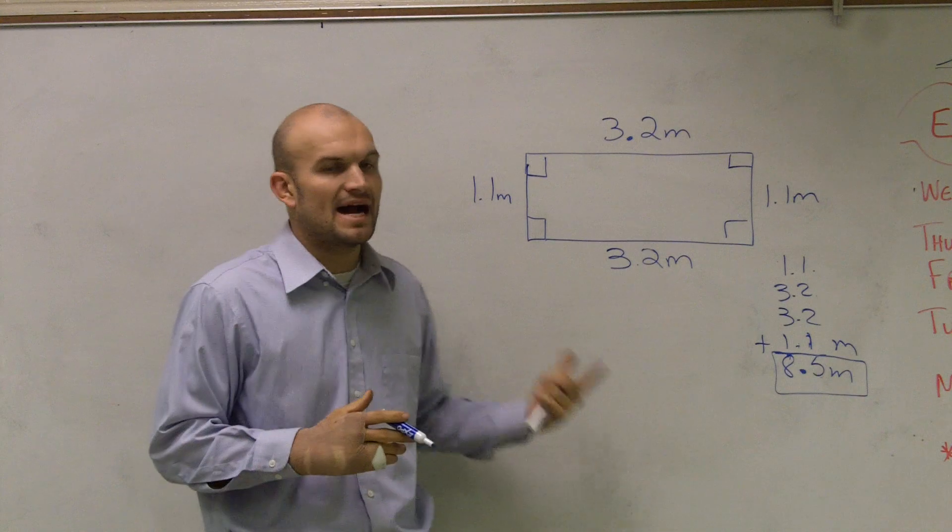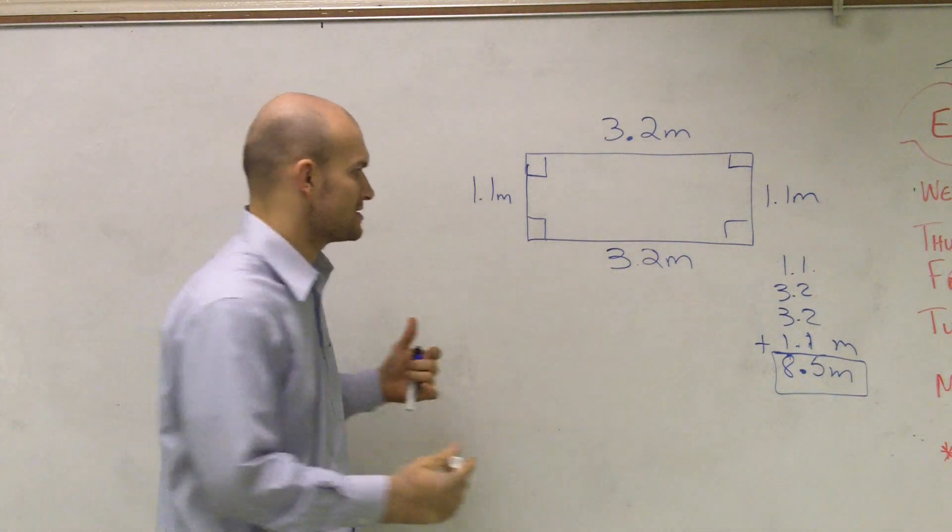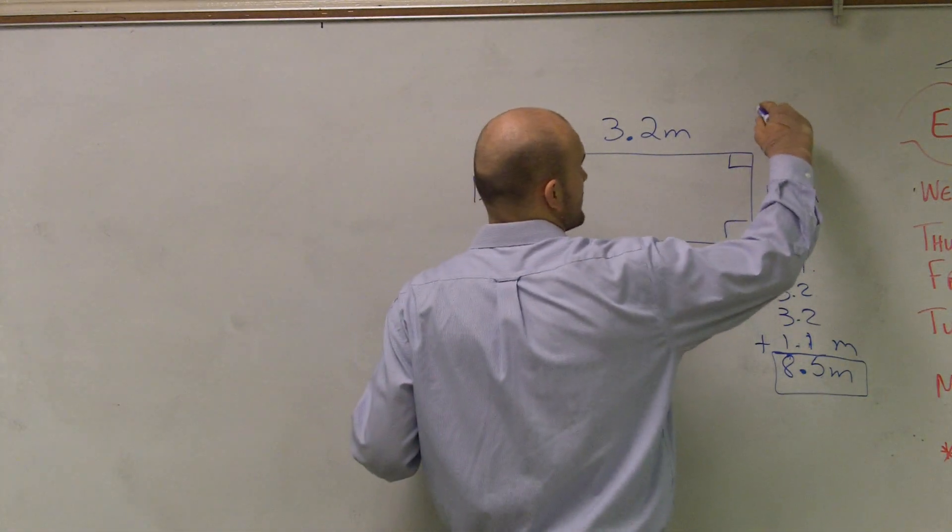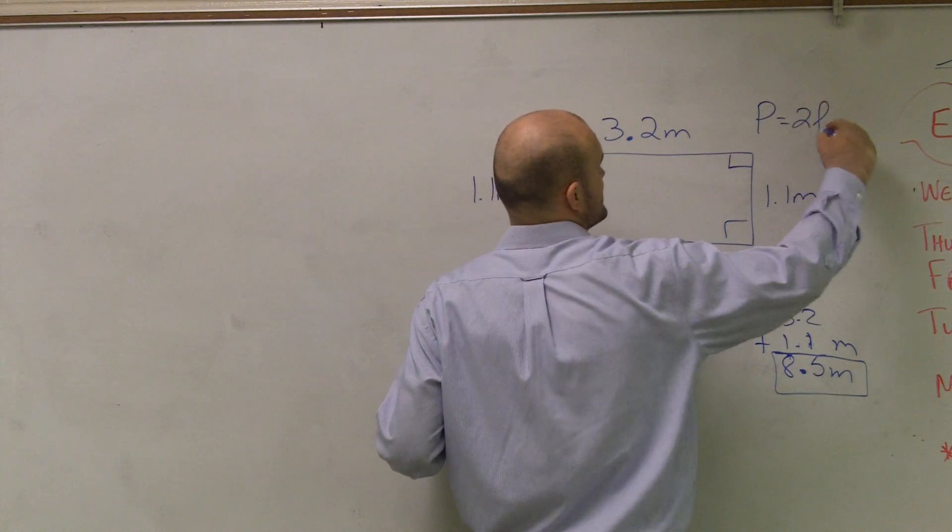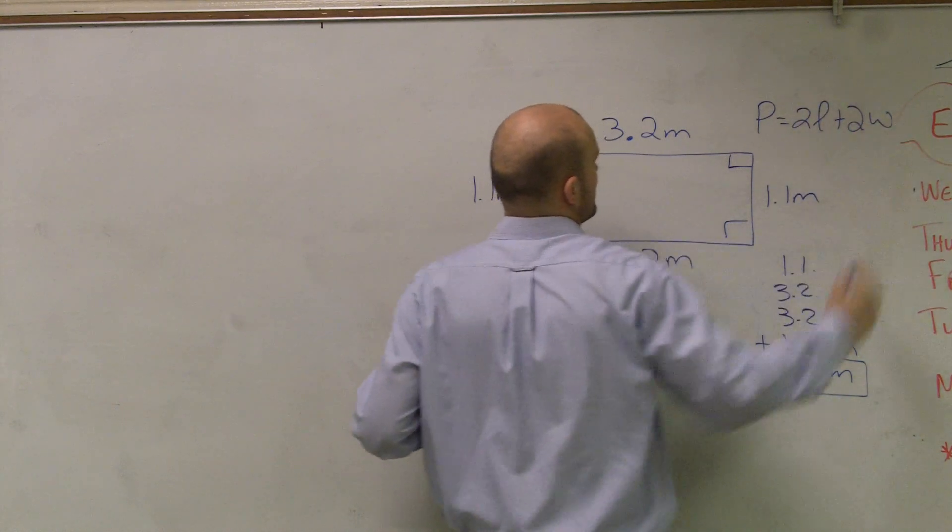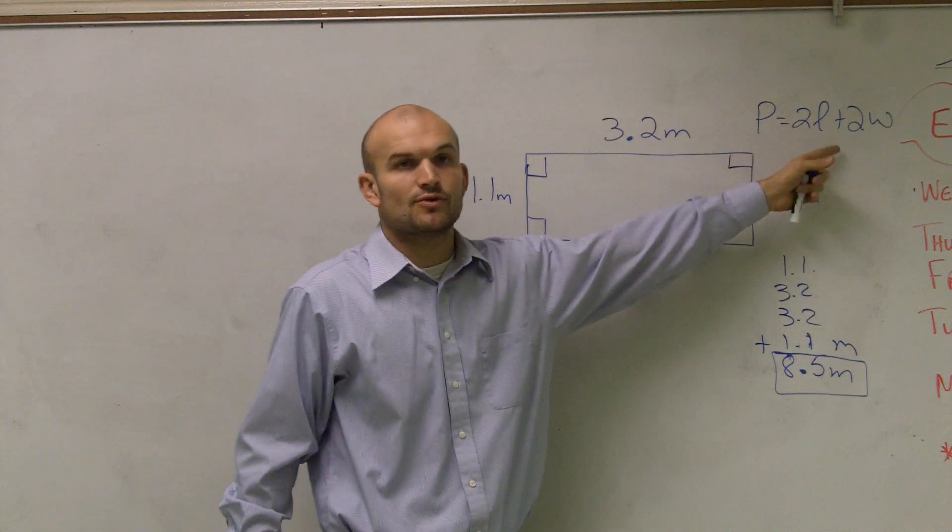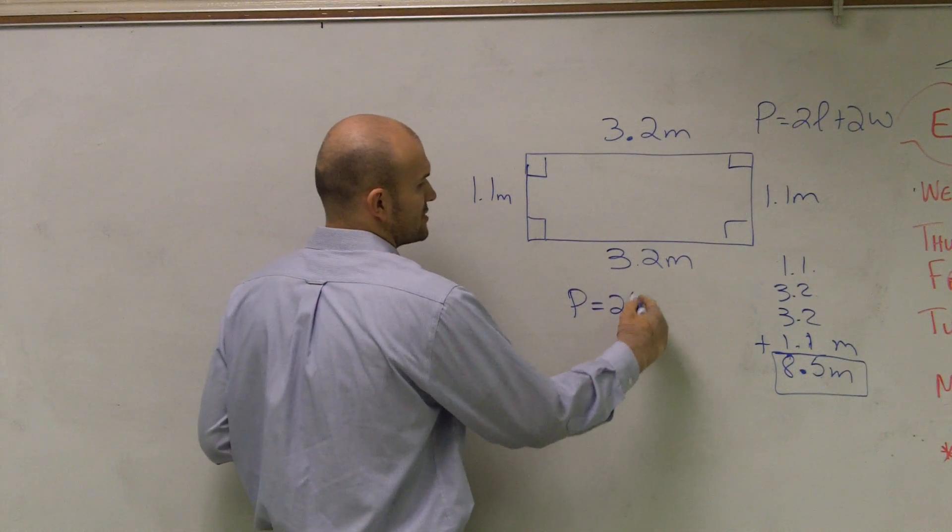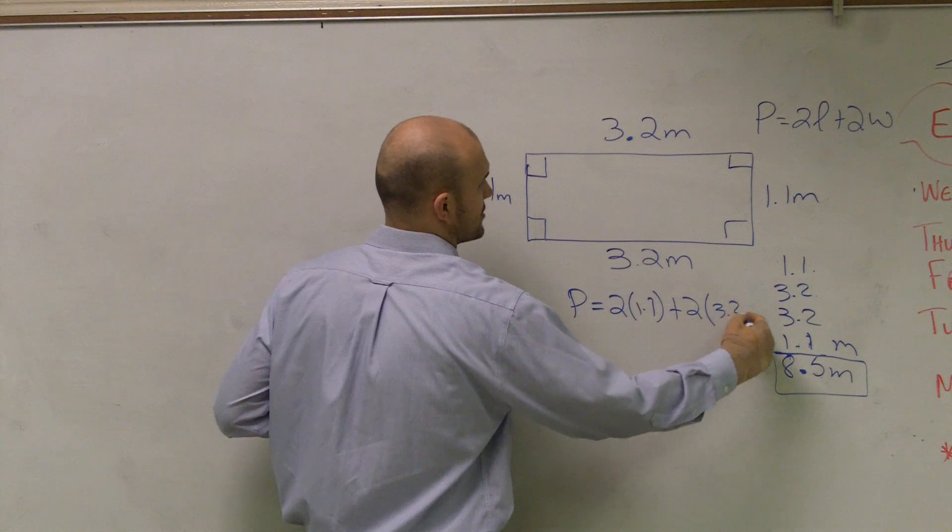Now, the next question says find the area. And the area gets a little bit difficult, because what perimeter says, perimeter tells you to add 2 times your length plus 2 times width. Meaning, take your length, multiply it by 2, and add it to your width, and multiply that by 2. To do that for the area, I could have done P equals 2 times 1.1 plus 2 times 3.2.